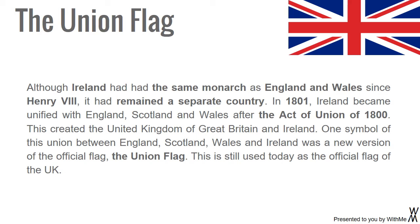The Union Flag. Although Ireland had had the same monarch as England and Wales since Henry VIII, it had remained a separate country. In 1801, Ireland became unified with England, Scotland and Wales after the Act of Union of 1800. This created the United Kingdom of Great Britain and Ireland. One symbol of this union between England, Scotland, Wales and Ireland was a new version of the official flag — the Union Flag — which is still used today as the official flag of the UK.